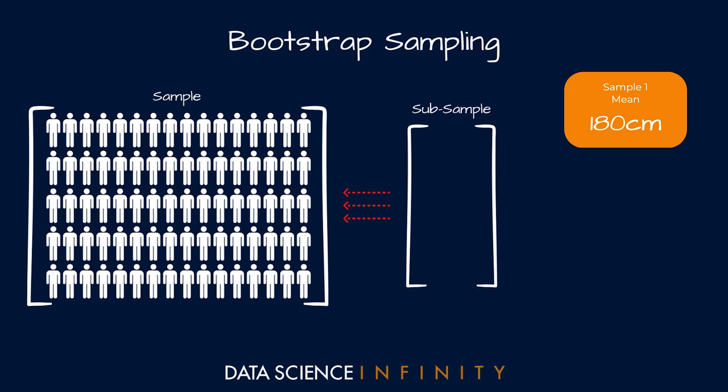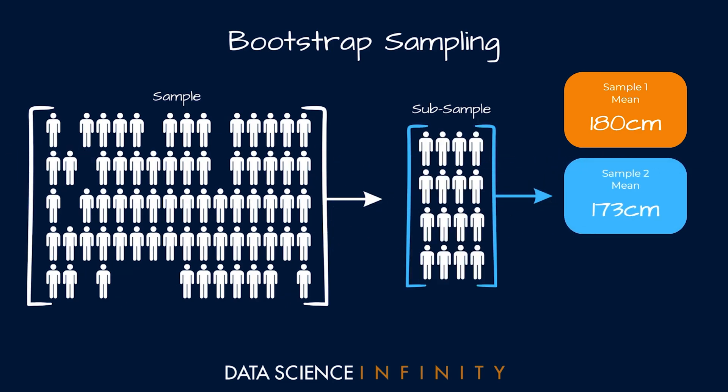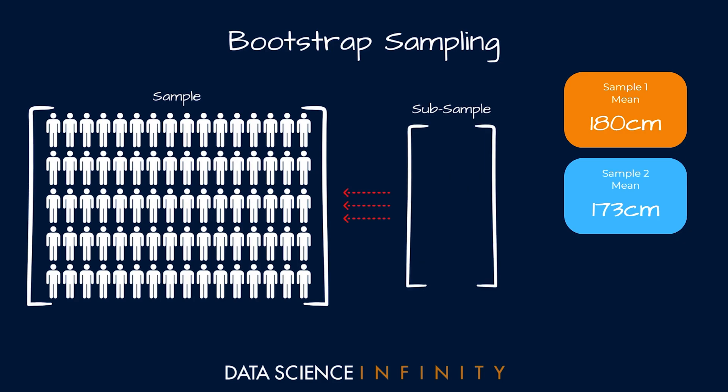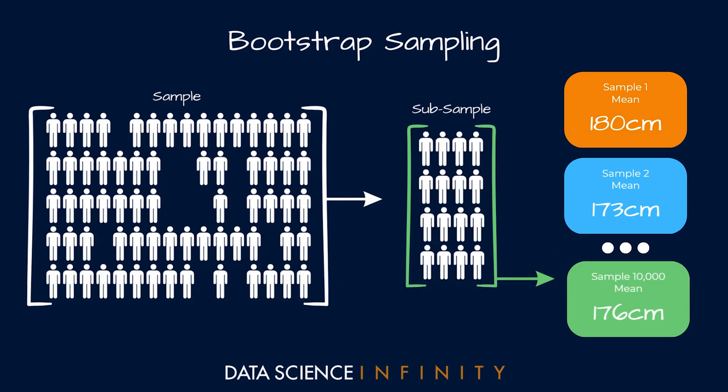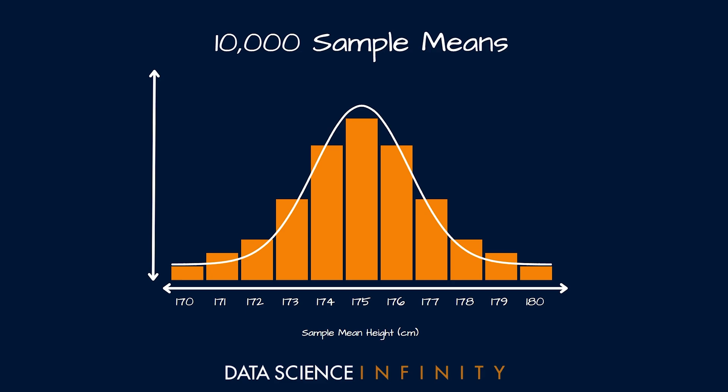Those 40 men go back into the pot, available to be selected again — this is known as sampling with replacement, which we saw in the central limit theorem definition. We then take a second random sample of 40 men and calculate their mean height. Each time, the random sub-sample of 40 will contain a new combination of men; some will be different and some may reappear. A computer can easily generate 10,000 random sub-samples, each with a slightly different mean, and we can plot that distribution of sample means to meet normal distribution assumptions.